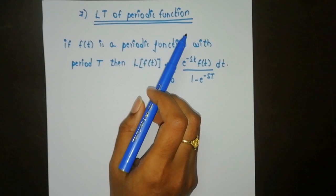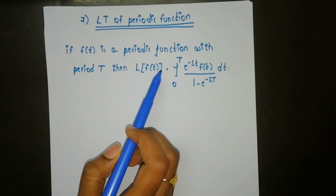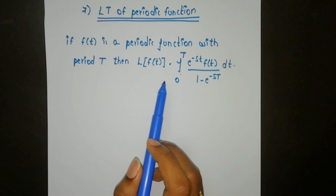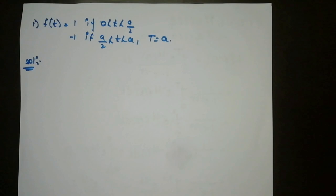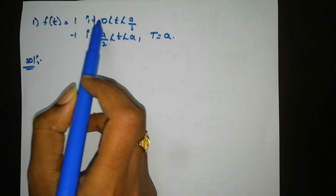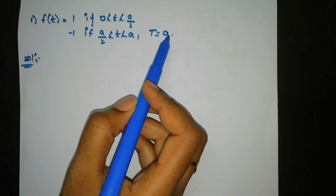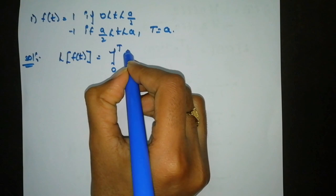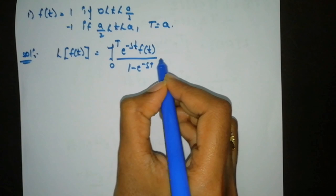This is the last model of Laplace transform: Laplace transform of a periodic function. The formula is: if f(t) is a periodic function with period T, then L{f(t)} = [∫_0^T e^(−st)·f(t) dt] / [1 − e^(−sT)]. The given problem is f(t) = 1 for 0 < t < a/2 and f(t) = −1 for a/2 < t < a. The period is T = a.